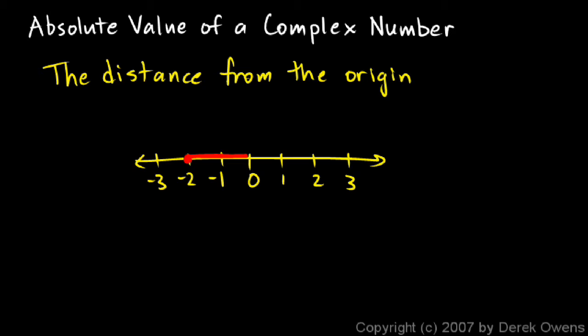So the absolute value of negative 2 is 2, and we write it with this notation. We say the absolute value of 2 is equal to 2, or the absolute value of negative 2 is equal to 2. And we use these two vertical bars just as the notation, the way we write it, to indicate absolute value.